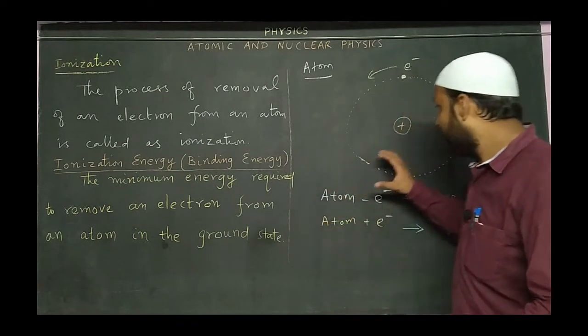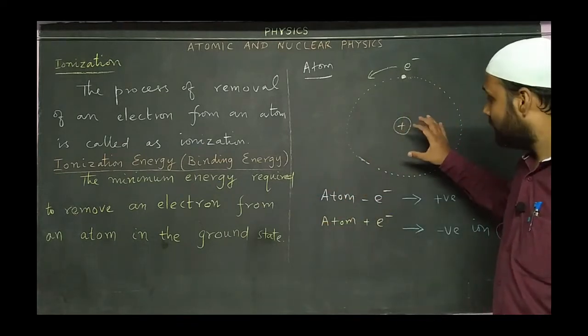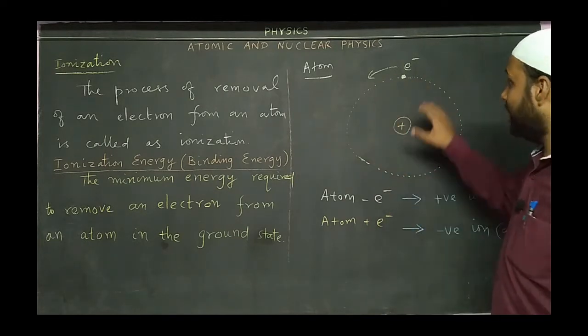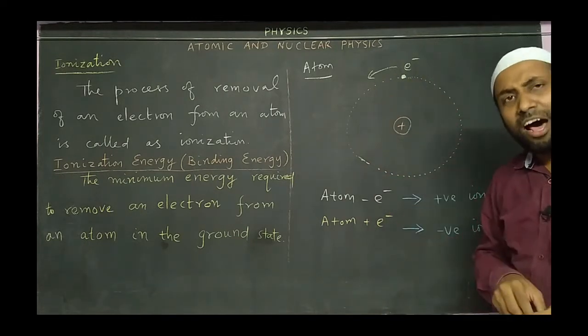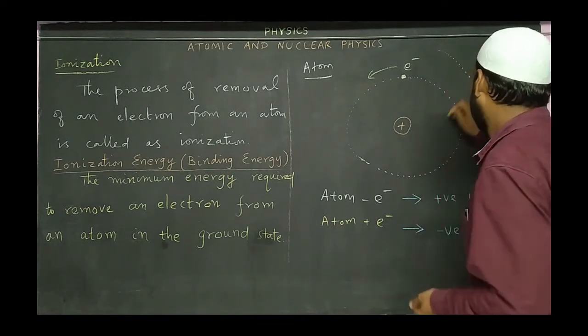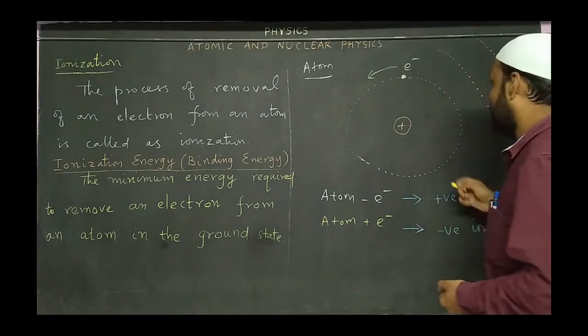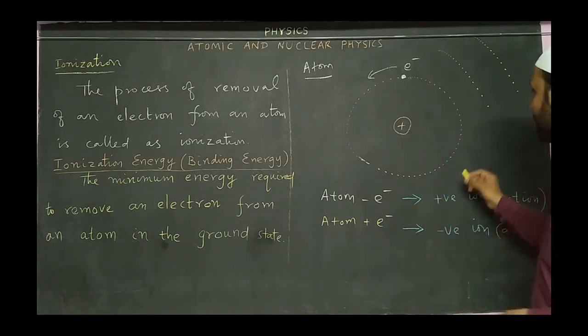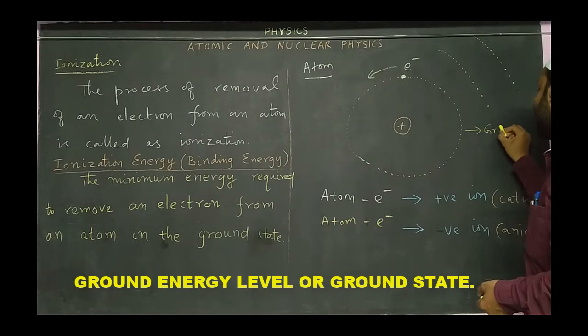I forgot to mention what is a ground state. If you look at the atom, it consists of a nucleus and around which electrons are revolving in energy levels. There are a large number of energy levels present around the nucleus. The energy level which is very close to the nucleus is referred as ground state.